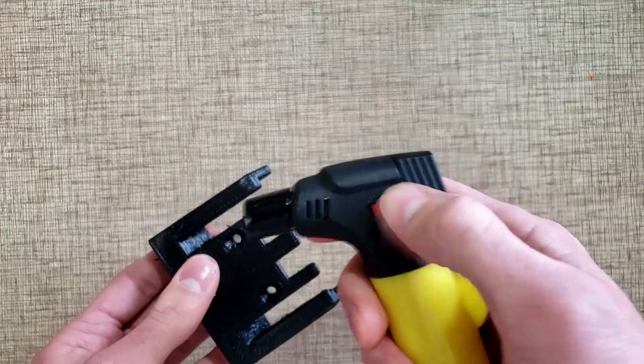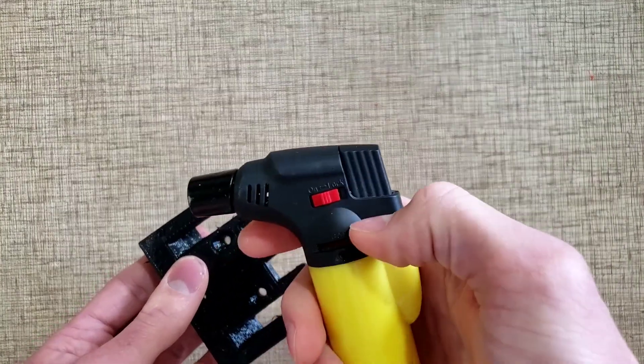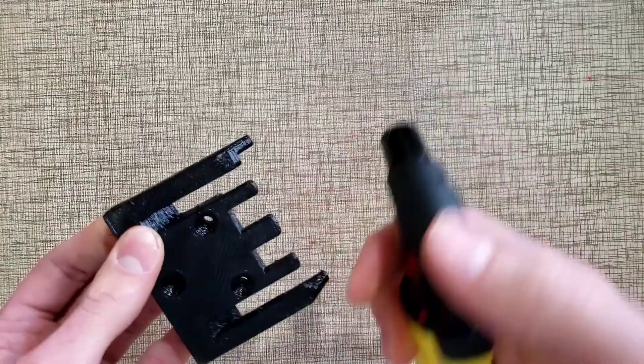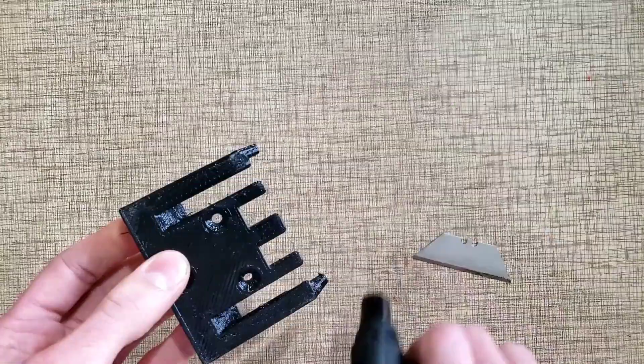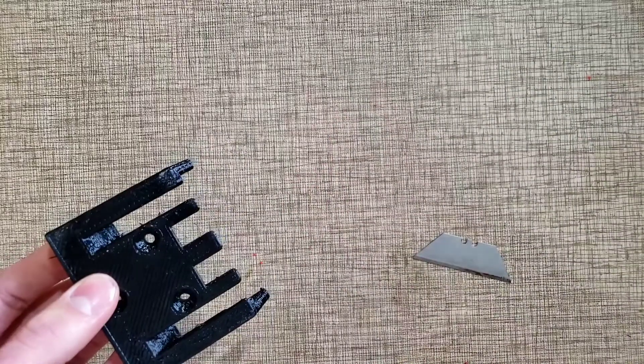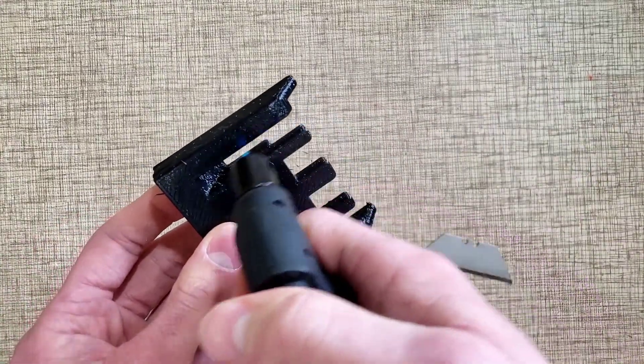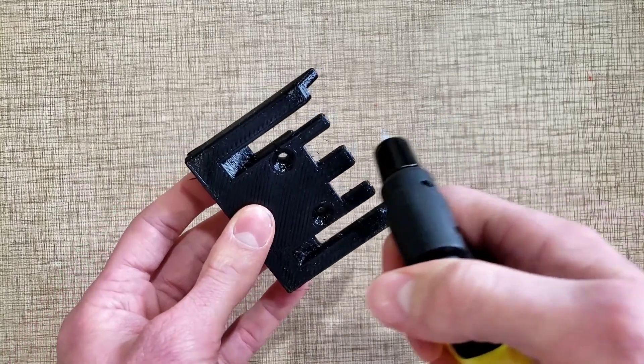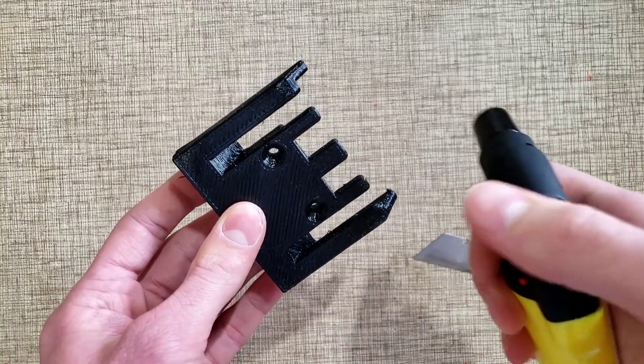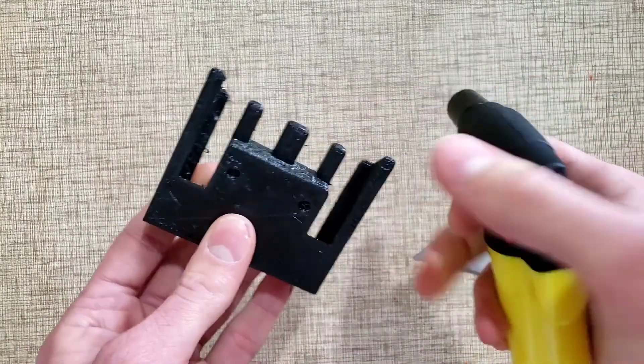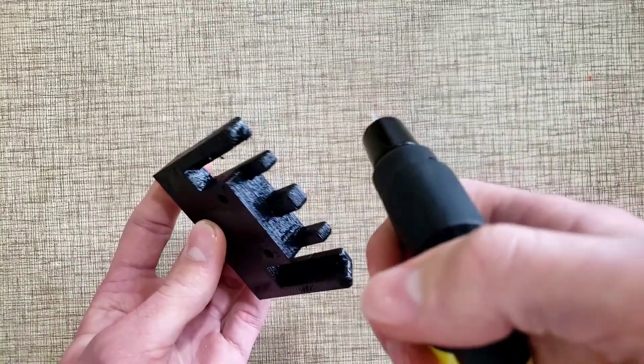So I have this little torch. Another thing you'll want to be really careful with, but you basically after you clean it up a little bit with your cuticle nippers and your tweezers, you can just use a torch and it burns up these strings really nicely, makes it look really nice and clean.